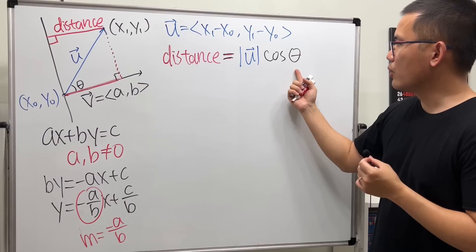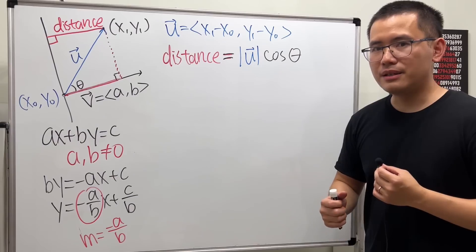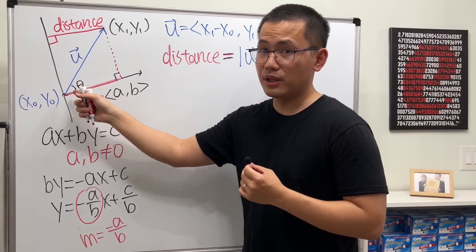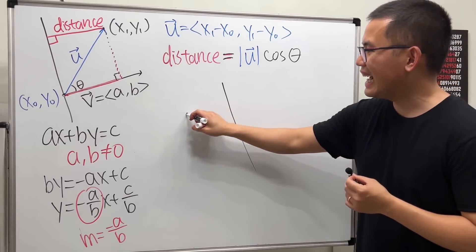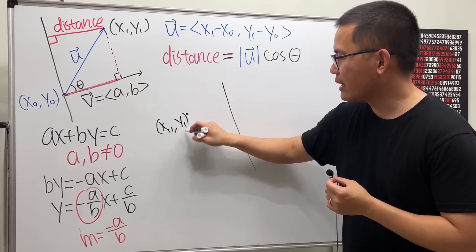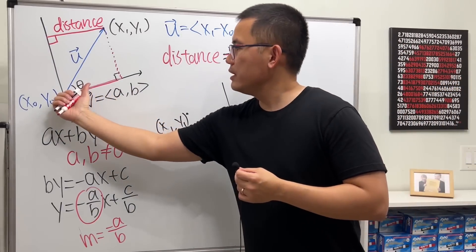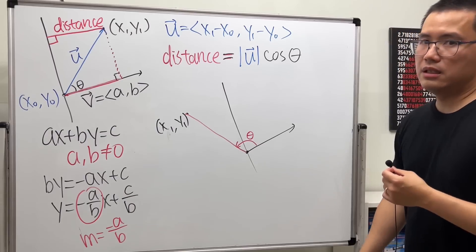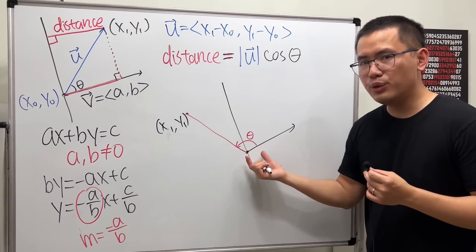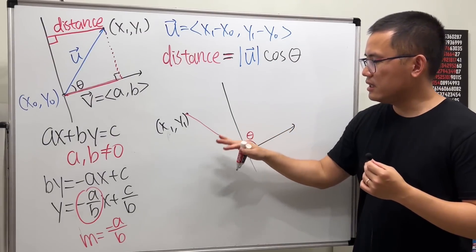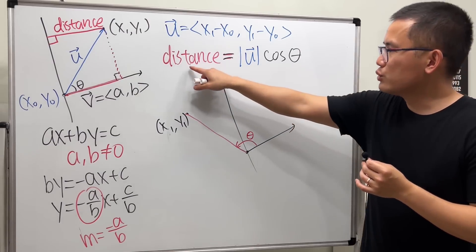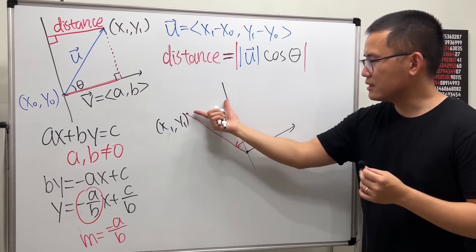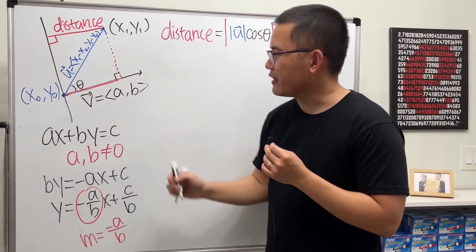It's possible for the angle between u and v to be greater than 90 degrees — this happens when the given point is on the other side of the line and the perpendicular vector v points away. Cosine of an angle between 90° and 180° is negative, but that's fine: we just apply absolute value to get the correct positive distance.